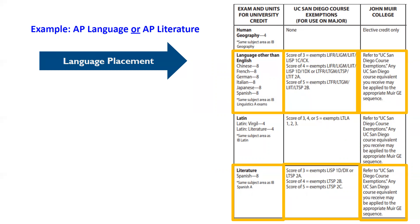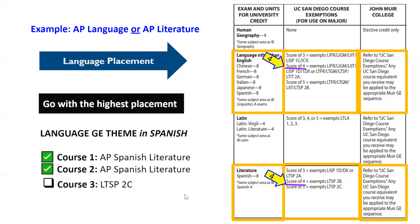For instance, let's say that you earned a score of four in AP Spanish Language and a score of four in AP Spanish Literature. The score of four on the AP Spanish Language exempts you from LTSB 2A and offers you placement into LTSB 2B. Since you take the highest placement, to complete a Muir language GE theme in Spanish, you need to take LTSB 2C — just one more language course in Spanish.